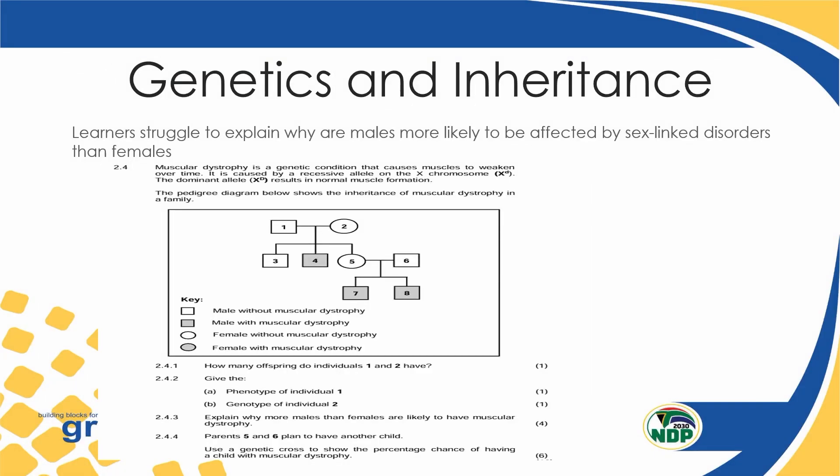We were about to talk about the mistakes that we do on genetic inheritance, more especially on the pedigree diagram. One of the things that we normally confuse as learners — the minute we see a pedigree diagram with key words saying that a square refers to a male and a circle refers to a female — we normally think that all pedigree diagrams are sex-linked inheritance. Yet it is not always the case. You always look at the opening statement. If it is not telling you that it is sex-linked inheritance, please don't make it sex-linked unless it is said to be haemophilia or colorblindness, which are the two we are supposed to learn as per our exam guideline.